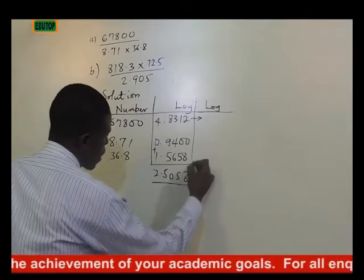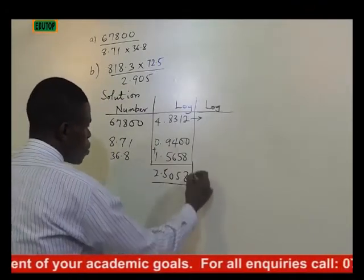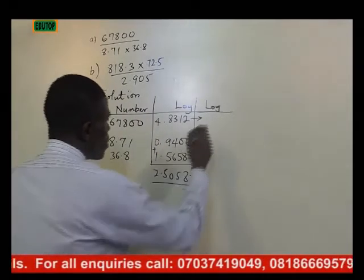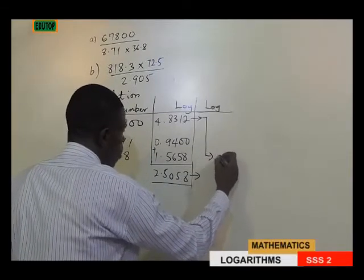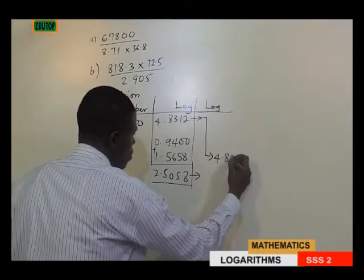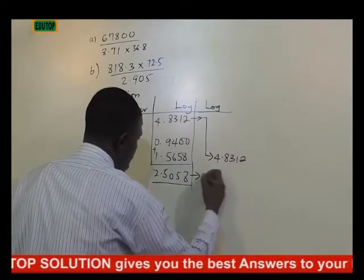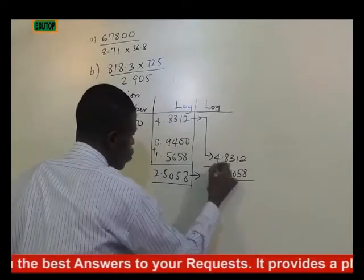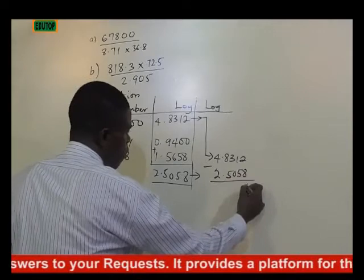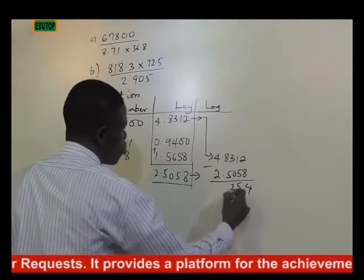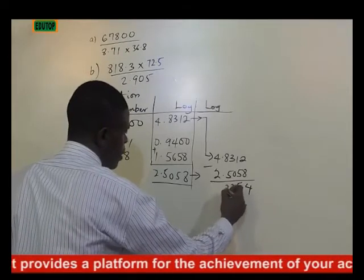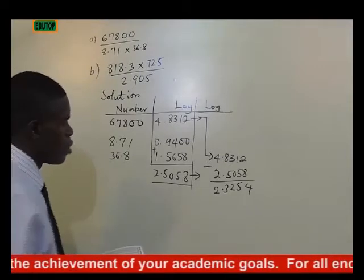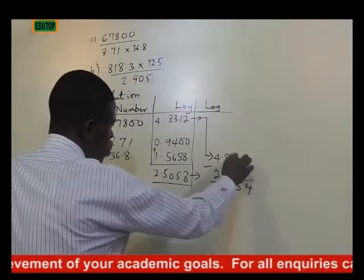So this is our denominator and this is our numerator. The relationship between the numerator and denominator is division, so we bring our numerator down and combine with our denominator. Since we have a division sign between them, we subtract. So doing this, we have 4, 5, 2 then 3.2, giving us 2.3254.